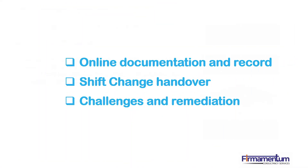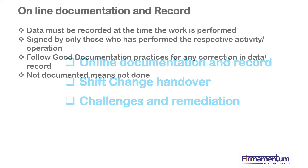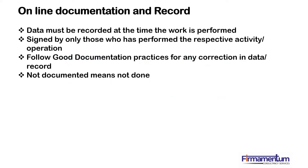Online documentation and record, shift changeover, and challenges and remediations related to production and controls are very critical and important topics. Data must be recorded at the time the work is performed, and signed only by those who performed the respective activity. If you are doing the activity and somebody else is signing, this is a crime in Good Manufacturing Practices and must not be done.